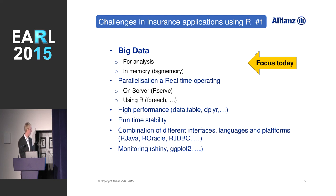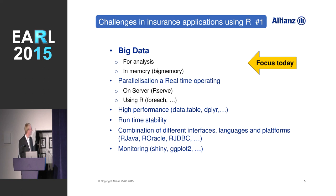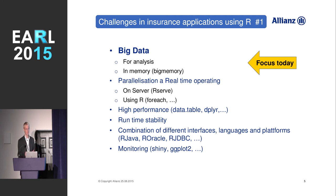Since we're in production, we have to monitor what we do — and for that we use Shiny. Some keywords: the bigmemory package. It enables you to store your data in shared memory, not just in one R process. You can store the pointer to this data and give that pointer to other R sessions, so multiple sessions can use the data. And since it is in shared memory, it's quite fast.